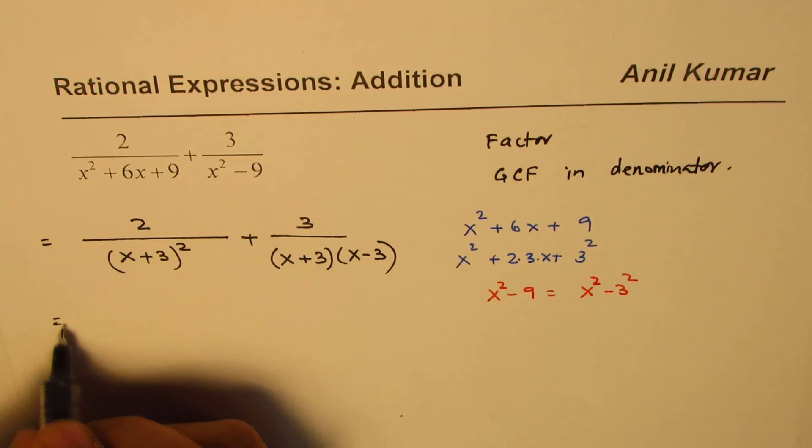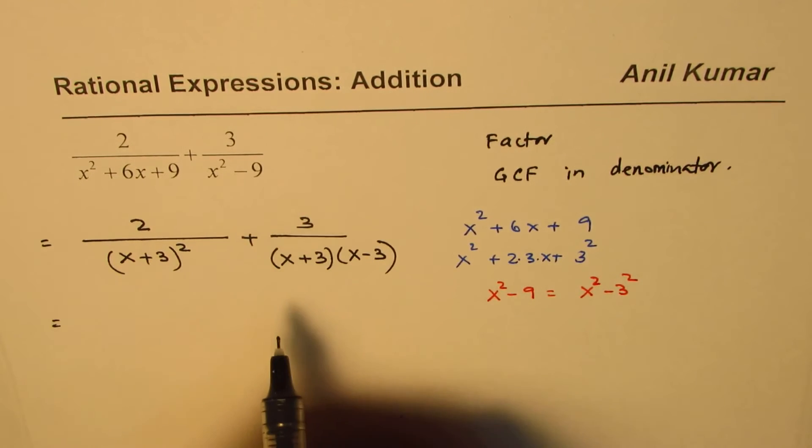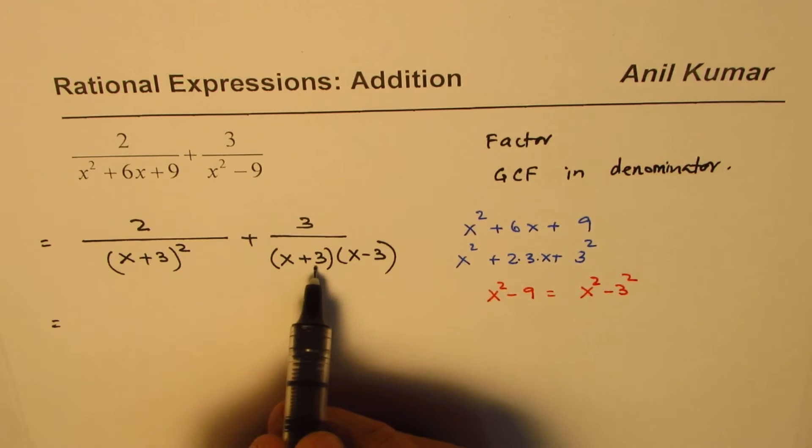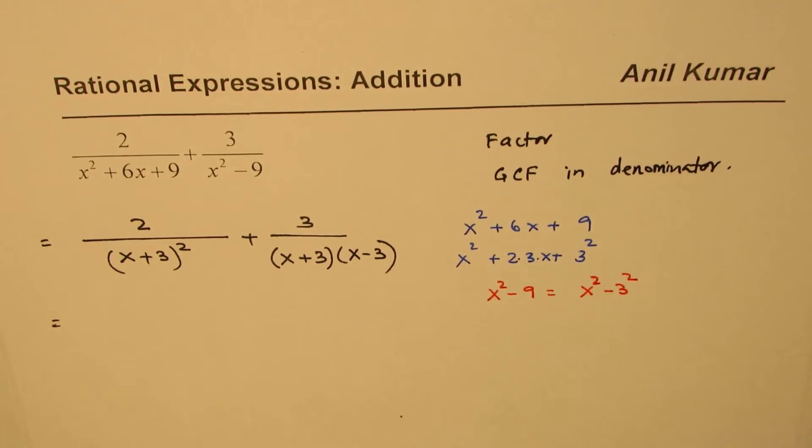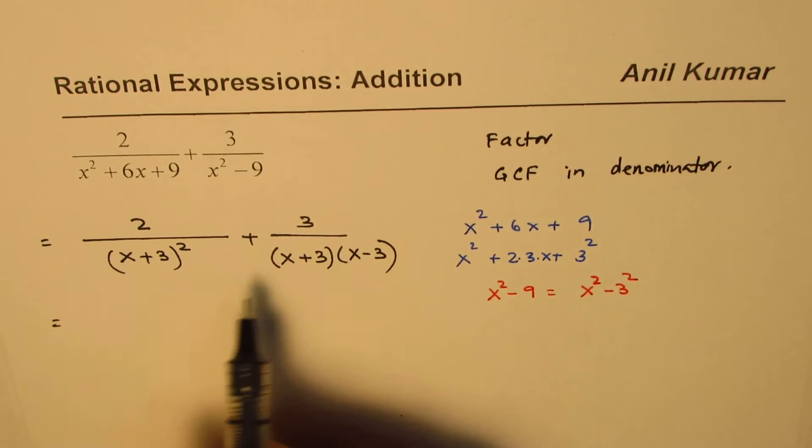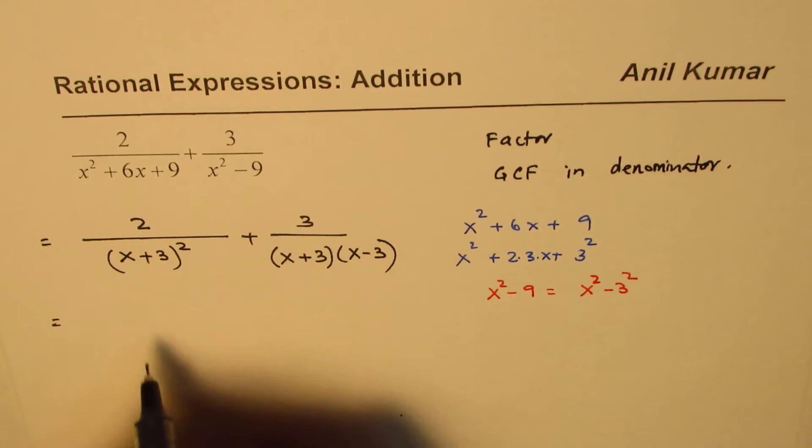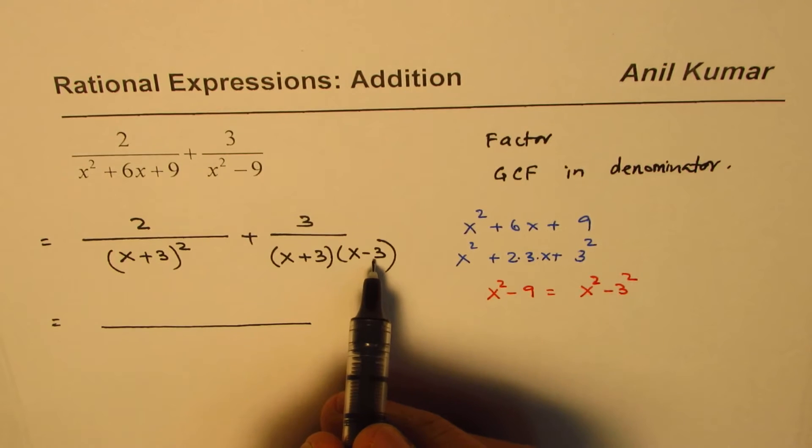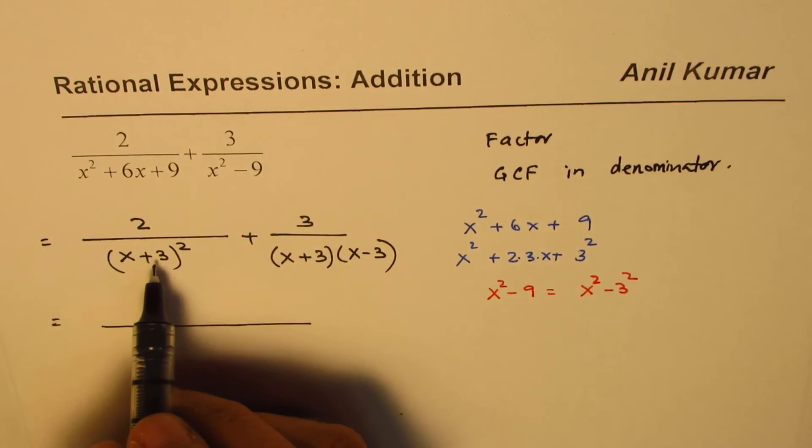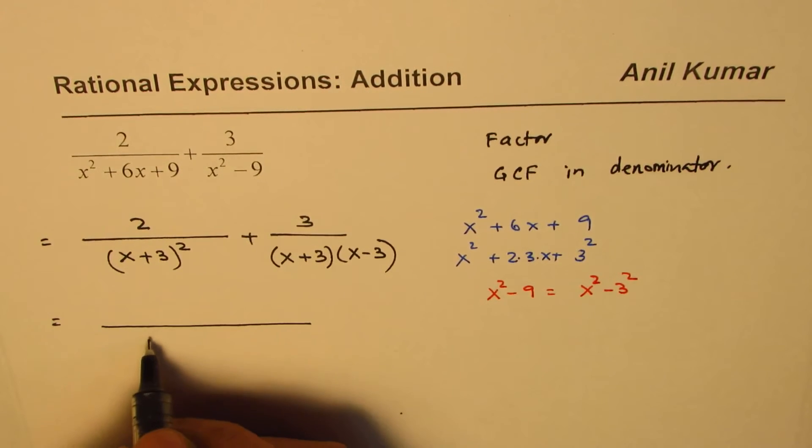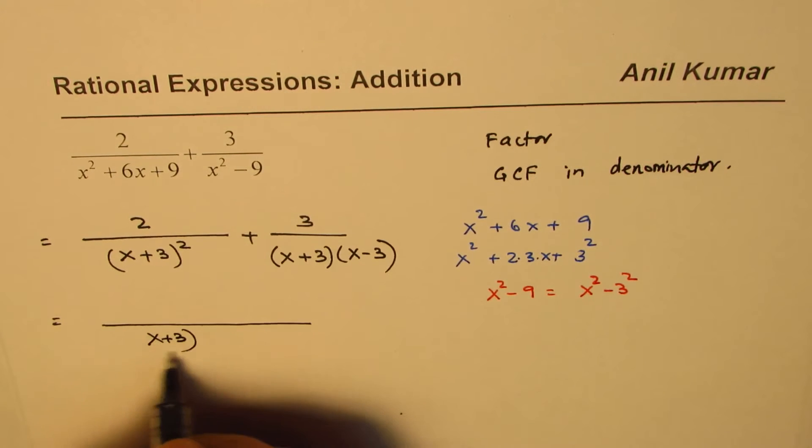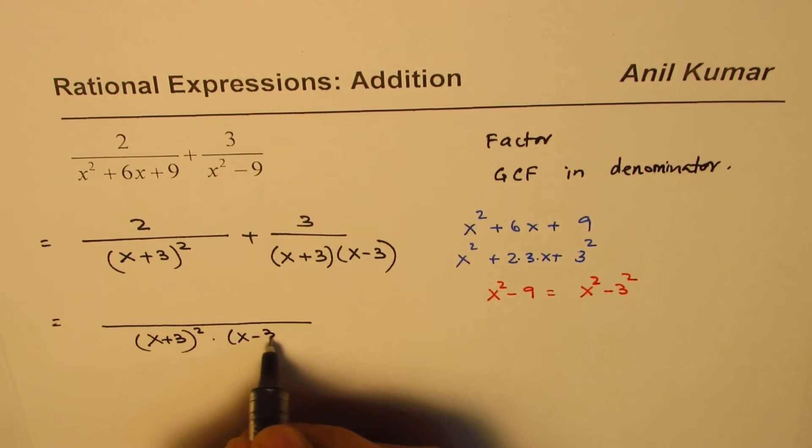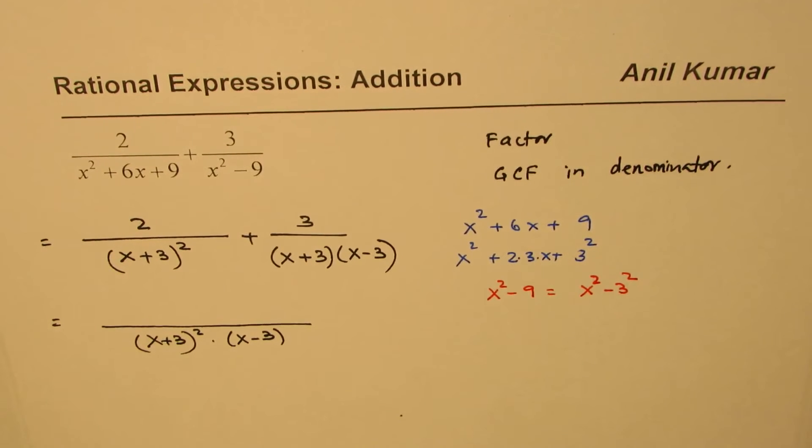Well, now we have factored form of our rational expressions: 2 over x plus 3 whole square plus 3 over x plus 3 times x minus 3. At this stage, let us look for greatest common factor. The factors are x plus 3 and x minus 3. So, the greatest common factor is x plus 3 square times x minus 3.